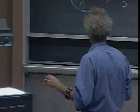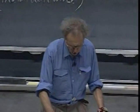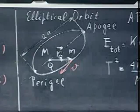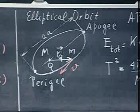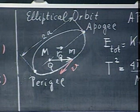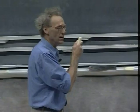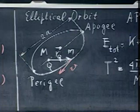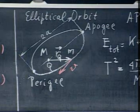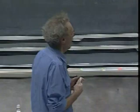Orbits in general are ellipses. On the blackboard you see an ellipse: capital M — could be the Earth, could be the Sun — is at location Q. The ellipse has a semi-major axis a, so the distance from perigee to apogee is 2a. If M is the Earth, the closest approach is called perigee and the farthest point apogee. If M is the Sun, they are called perihelion and aphelion. The object little m moves in orbit with position vector r and velocity v, and the total mechanical energy — kinetic plus potential — is conserved.